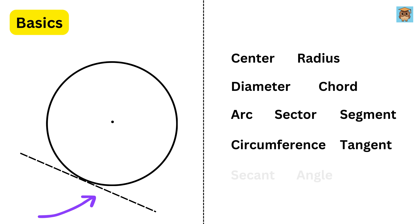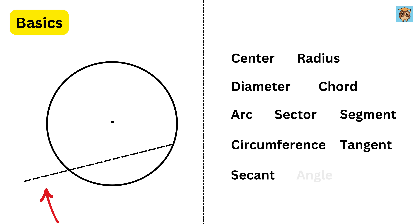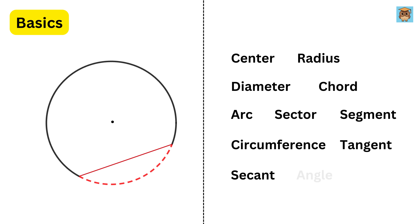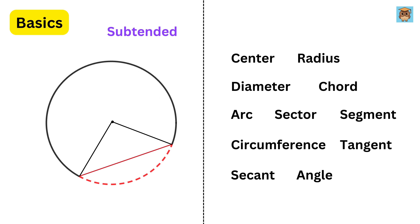A tangent to a circle is a straight line that touches the circle at exactly one point without crossing it. A secant is a straight line that intersects the circle at two distinct points. We use the word subtended to describe how an arc or a chord creates an angle at a point on the circle. For example, when an arc forms an angle at the circumference, we say the angle subtended at the circumference by the arc. Similarly, if the angle is formed at the center, we say the angle subtended at the center by the arc.